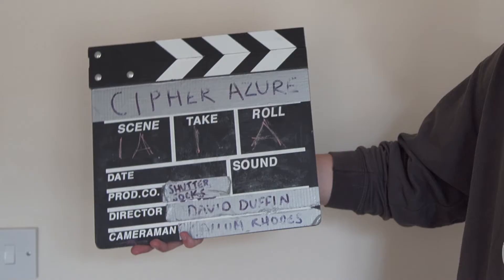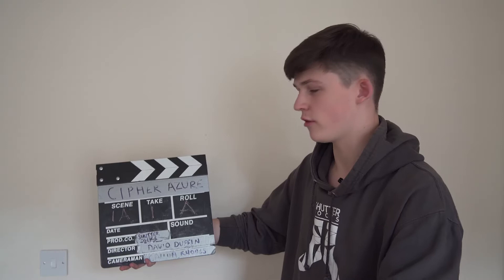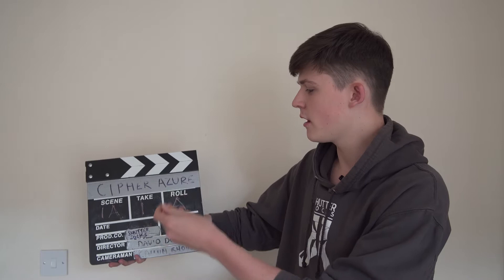So reading a slate — there's quite a lot of information displayed on there, but it's all relatively straightforward. Your scene: in this case we've got scene 1A, that's obviously the scene of the film you're shooting. That could be scene 1A, 3B, 7D — doesn't really matter as long as it matches your shot list.